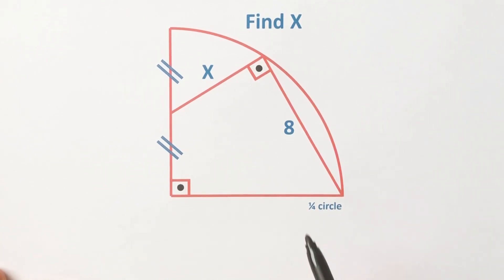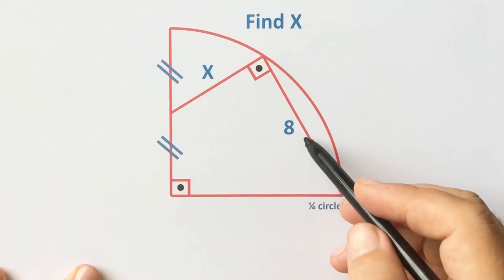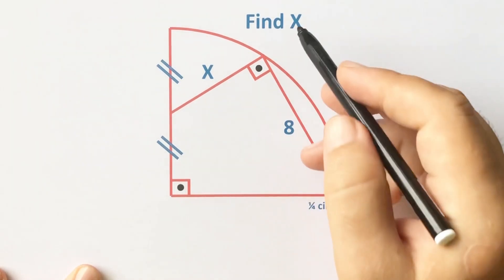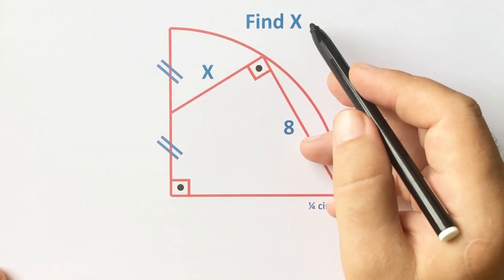Hello everyone. In this video we have one quarter circle where x is marked, the length here is 8, these two parts are equal, and we need to find x.